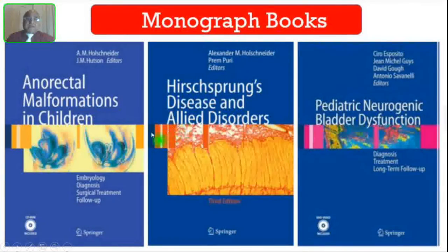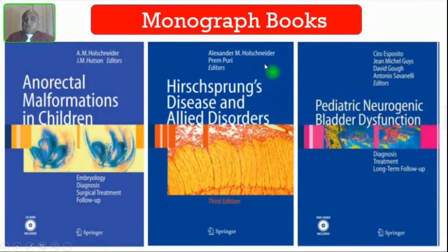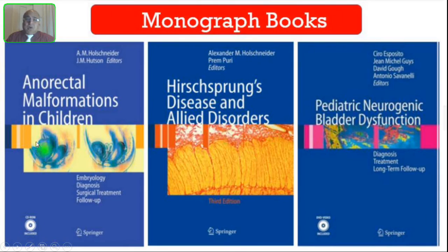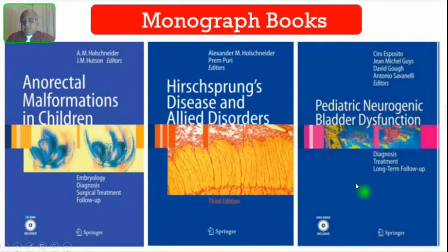Coming to monographs — that means books on individual diseases. One book deals only with anorectal malformation by Professor Holstein. Another deals mainly with Hirschsprung's disease, also by Professor Alexander Holstein. And another book deals with pediatric neurogenic bladder dysfunction. Each book deals with an individual disease, so if you are doing any research or presenting papers on a particular disease, you can refer to these books.